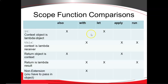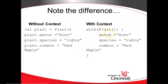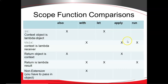Now let's compare that to `run`. `run` is very similar to `with`. The only difference is that it is an extension function, which means we don't have to pass the object in. Instead, we use the object and then say `.run` followed by an open and close curly. Just a subtle difference on that one.